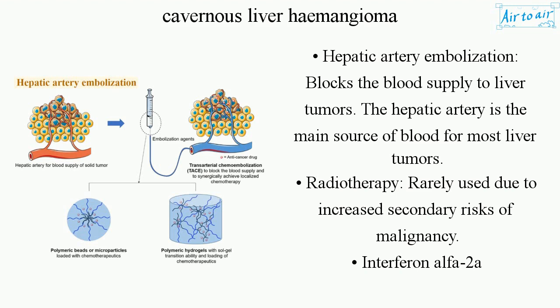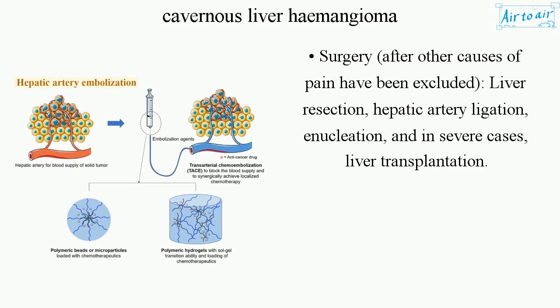Radiotherapy is rarely used due to increased secondary risks of malignancy. Other treatment options include interferon alpha 2a and surgery — after other causes of pain have been excluded — such as liver resection, hepatic artery ligation, enucleation, and in severe cases, liver transplantation.